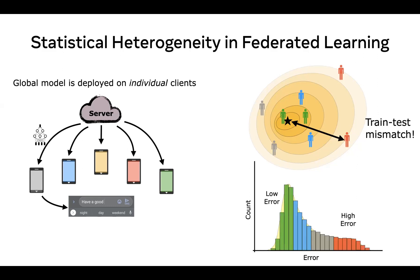This train test mismatch manifests itself as a spread over per client performance. For instance, clients which conform to the population, such as those in green and blue here, achieve low error because they're close to the average training distribution. On the other hand, clients who do not conform to the population, such as the red and the grey in this particular figure, suffer from high prediction error.